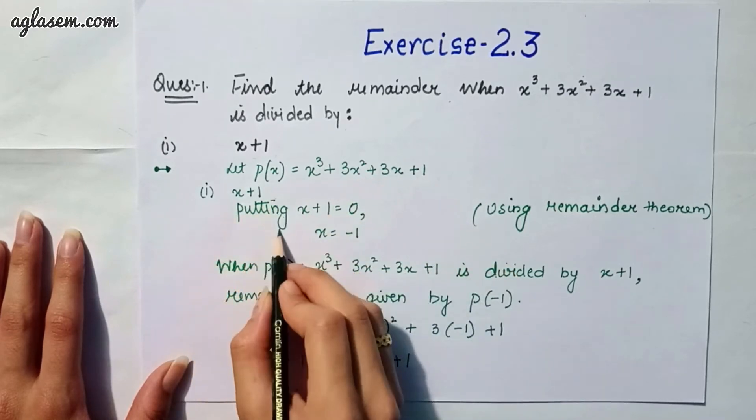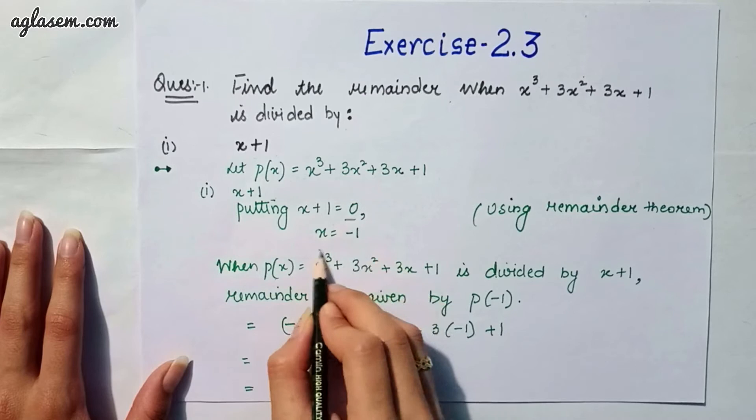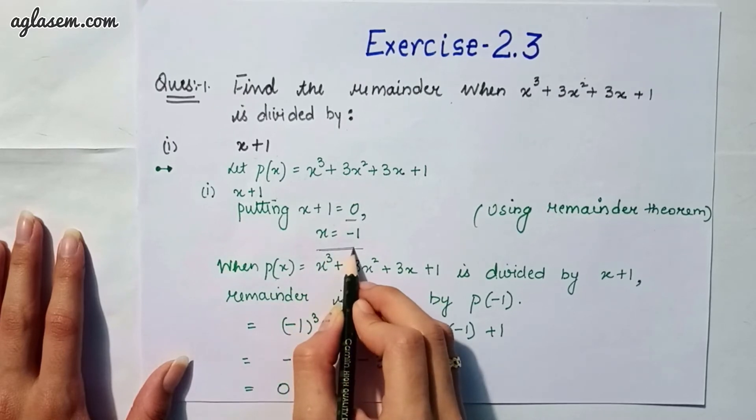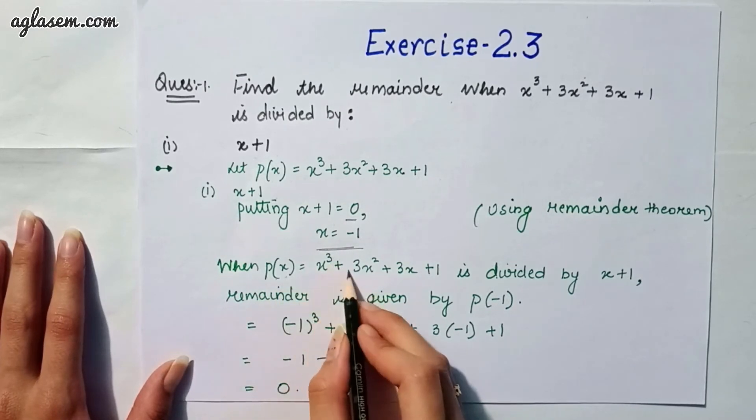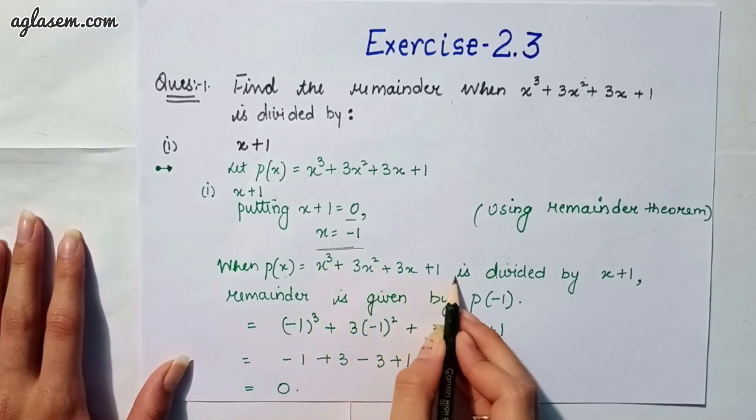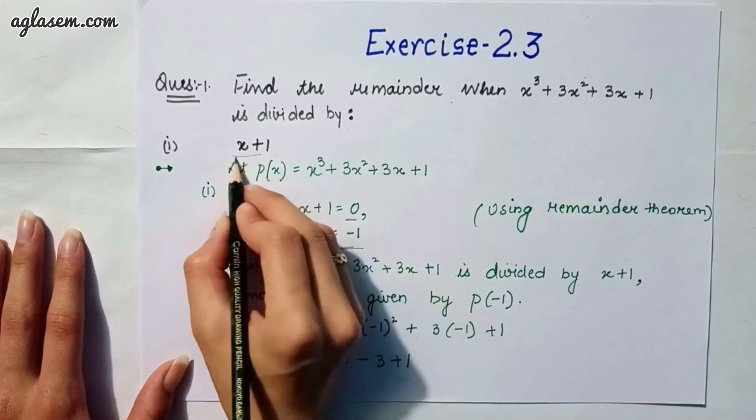So, x + 1, we can have it equals to 0 and our x value will be -1 by using remainder theorem. When P(x), that is, x³ + 3x² + 3x + 1 is divided by x + 1...